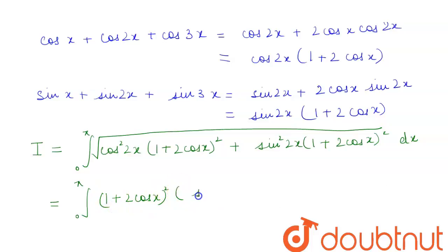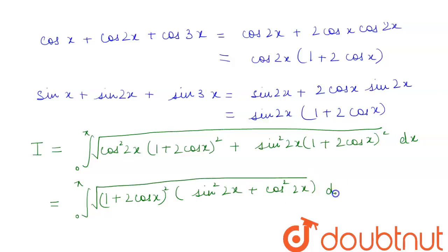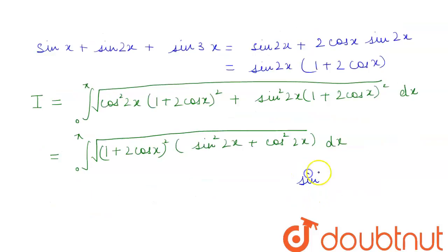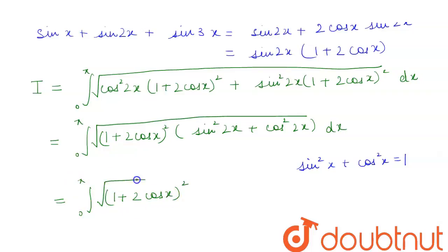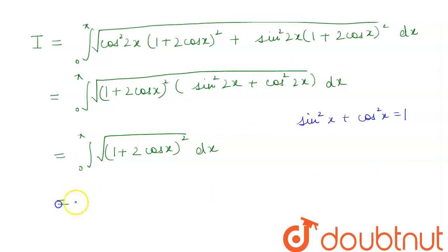We have the identity sin²2x + cos²2x = 1. Applying this, we get I = integration from 0 to π of the square root of (1 + 2cosx)² dx, which equals integration from 0 to π of |1 + 2cosx| dx.